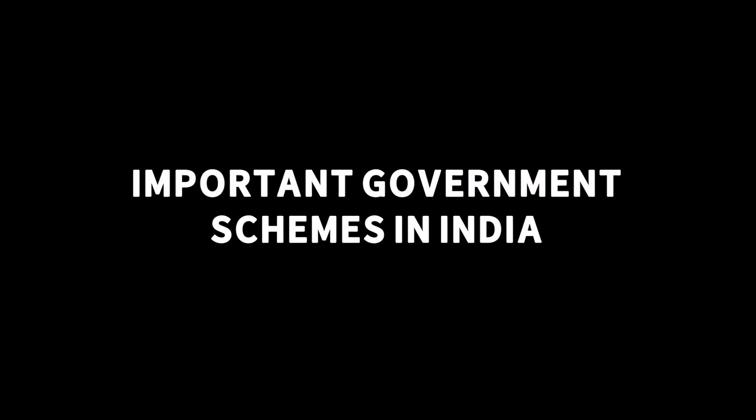Good evening everybody. I am going to talk about important government schemes in India. In this presentation I want to cover four schemes. First is about rural India — a scheme addressing rural India. Second is about urban India. Third one caters to the primary girl child. Fourth one caters to graduate people — those who are finishing school and going to college.